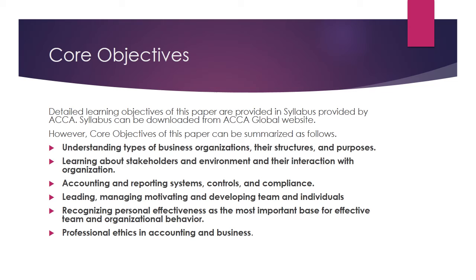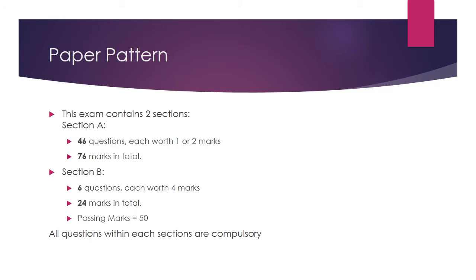Professional ethics in accounting. Regarding the paper pattern, this exam contains two sections. Section A has 46 questions, each worth one or two marks, making 76 marks in total. Section B has 6 questions, each worth 4 marks, making 24 marks in total. The passing mark is 50, and all questions within each section are compulsory.